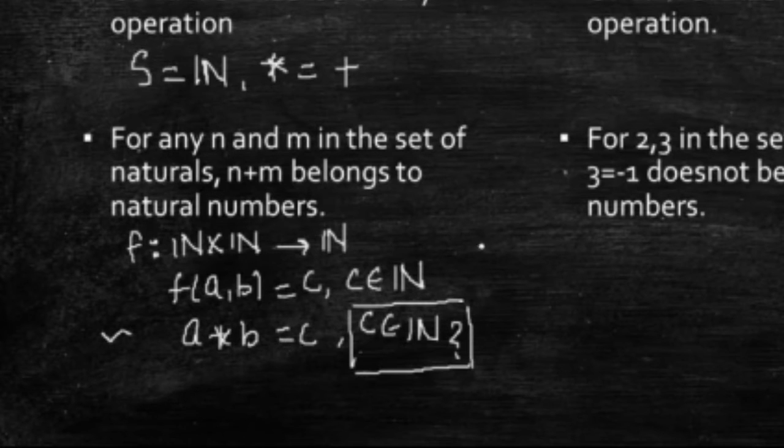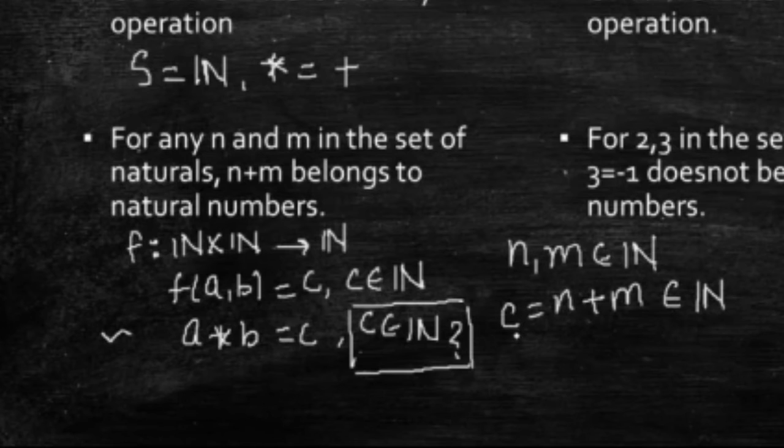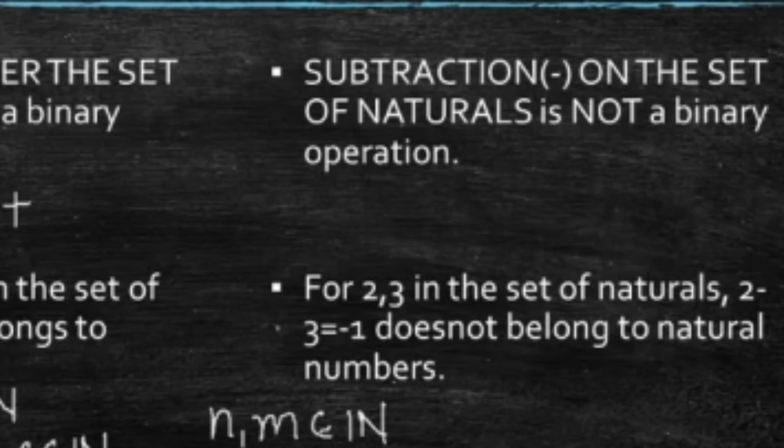So, consider you have two elements, n and m, in the set of natural numbers, you have to add them, your binary operation is addition. So, you have to add them, and you know that, the sum of two natural numbers fall in the naturals only. So, the product of n and m, which I am calling here is c, is in N, and hence, addition is a binary operation.